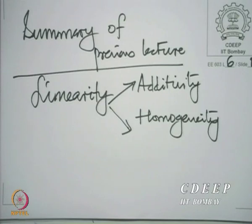We had remarked, and I had left it to you as an exercise to prove, that the relationship is two-way. In other words, additivity and homogeneity together come to make linearity once again. Together they are sufficient for linearity to hold.